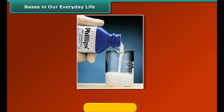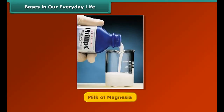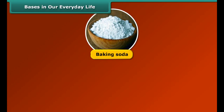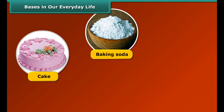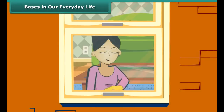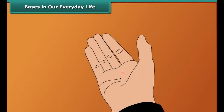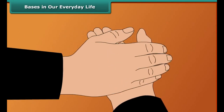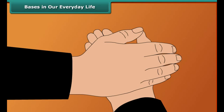The word 'alkali' is derived from the Arabic word 'al-qali,' meaning ashes, referring to the original source of alkaline substances. The chemical name of lime is calcium hydroxide. Lime water is prepared by dissolving lime in water. Milk of magnesia is a medicine which helps us digest our food; it contains magnesium hydroxide, which is a base.